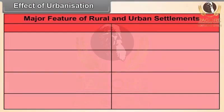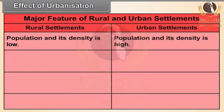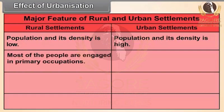Major features of rural and urban settlements: Rural settlements — population and its density is low. Urban settlements — population and its density is high. Rural settlements — most of the people are engaged in primary occupations. Urban settlements — most of the people are engaged in secondary or tertiary occupations.